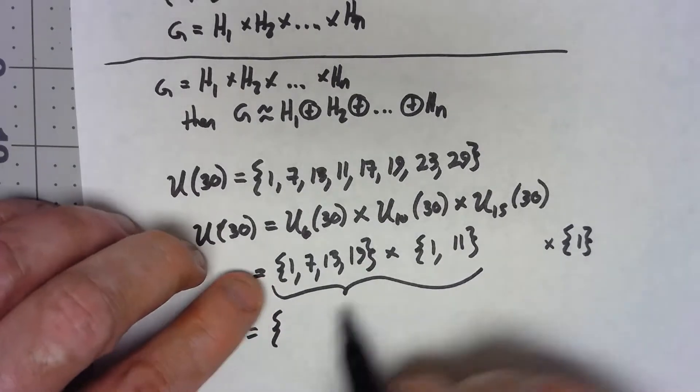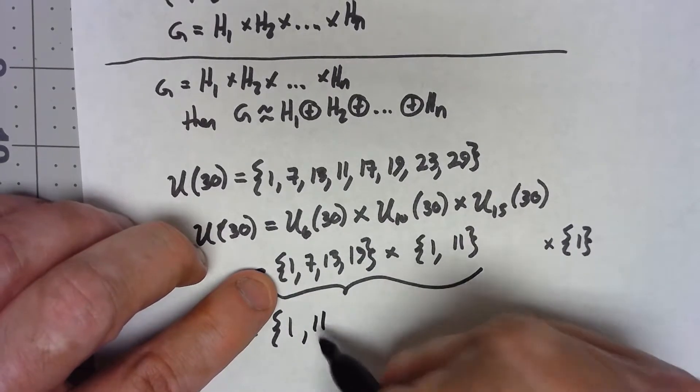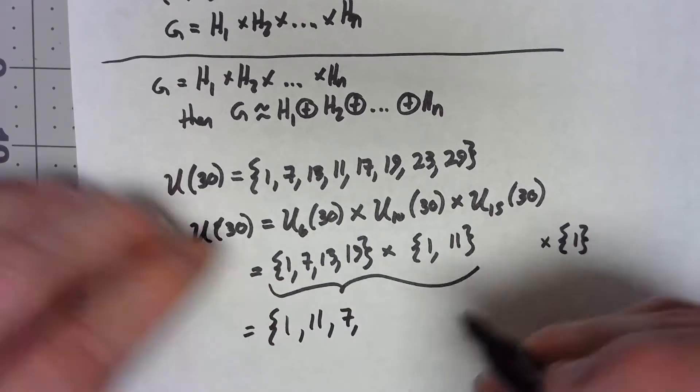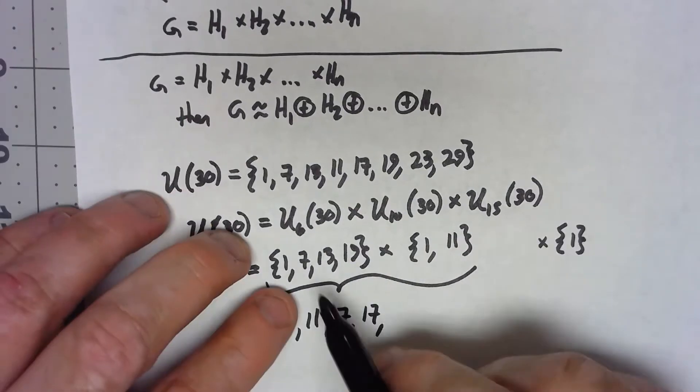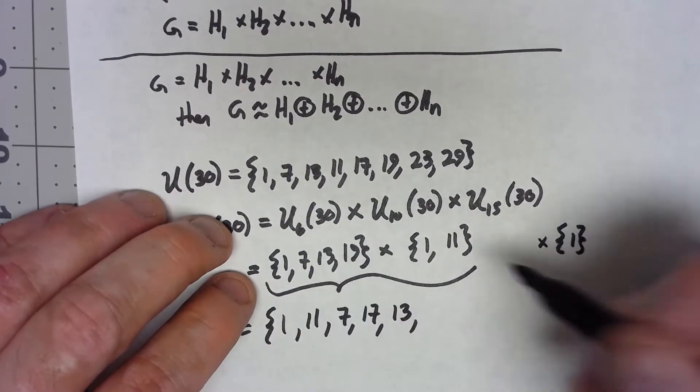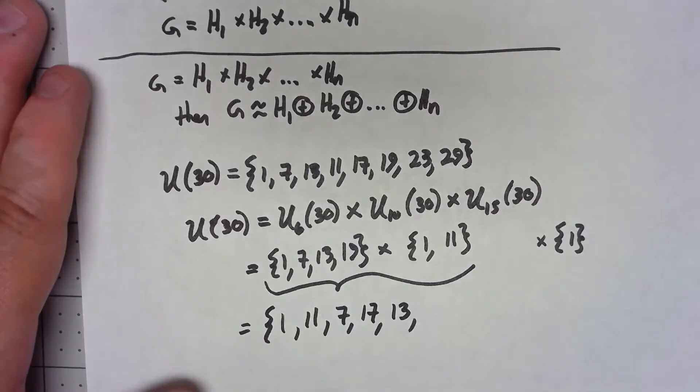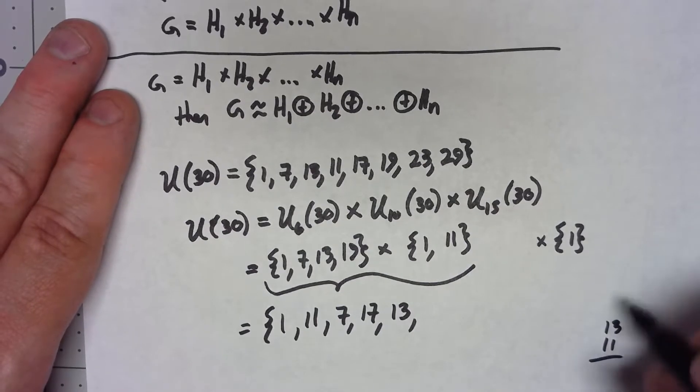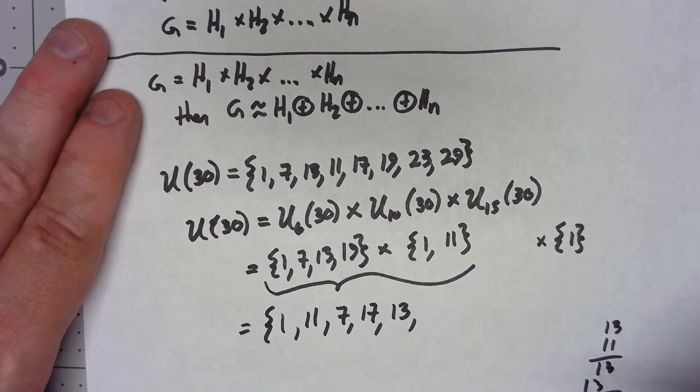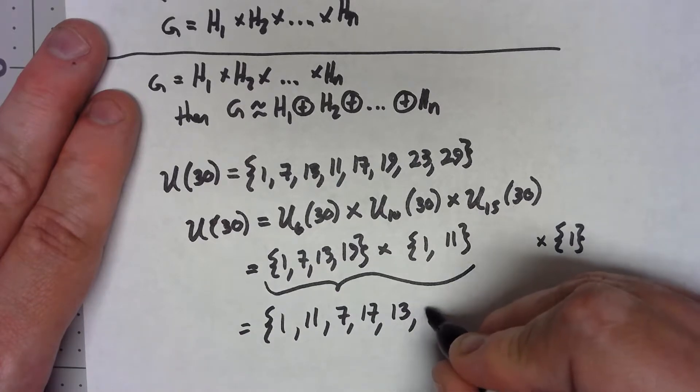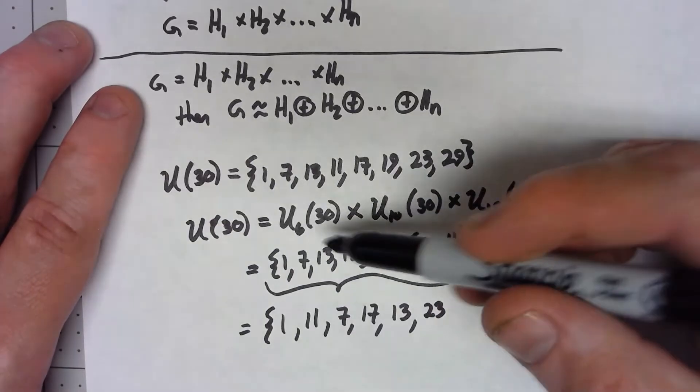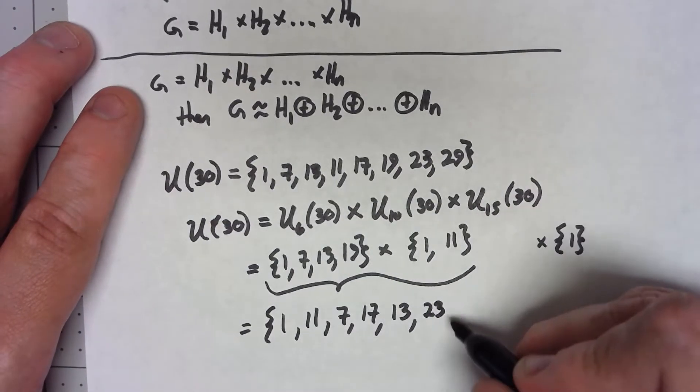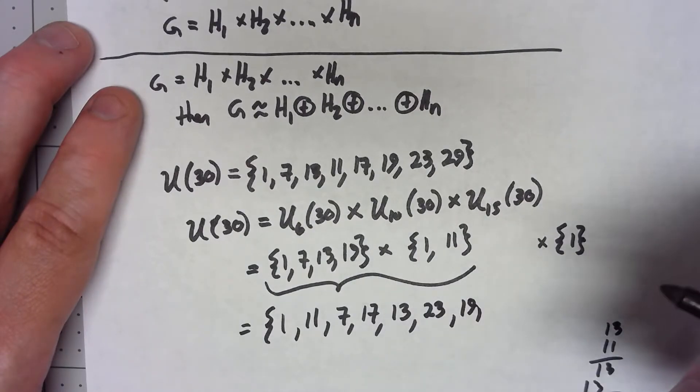1 times 1 is 1. 1 times 11 is 11. 7 times 1 is 7. 7 times 11 is 17. 13 times 1 is 13. 13 times 11 is 23. 13 times 11 is going to give me 143 and when I do that mod 30 is going to give me 23. 19 times 1 is of course 19, and 19 times 11 is going to be 29.